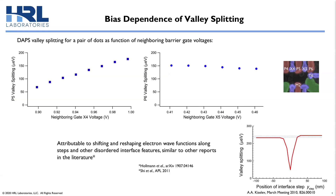Now that we have DAPS to measure valley splitting, we can explore the dependence of the valley splitting on the voltage bias. We're measuring DAPS on the P6-P5 pair, and we can shape the electrochemical potential of the P6 dot by changing the voltages on neighboring X gates — P6 by changing X5, and P5 by changing X4. The valley splittings we measure for these two dots are plotted as a function of each dot's neighboring gate voltage. We see P5 is quite sensitive to the voltage bias, while P6 is much less so. We attribute the change in the P5 valley splitting to the electron wave function sampling different disordered features as we shape the potential. Similar observations have been made by other groups, and it was also predicted by theory several years ago.